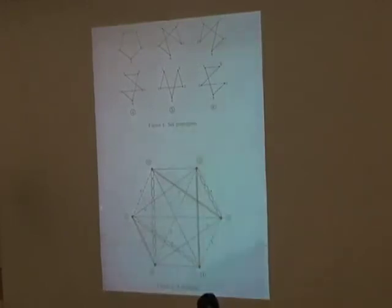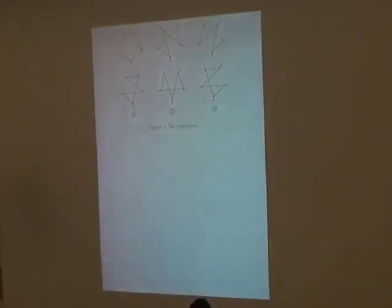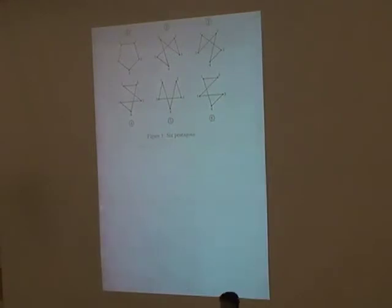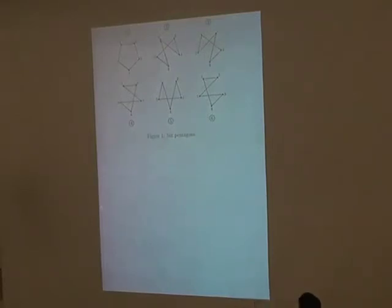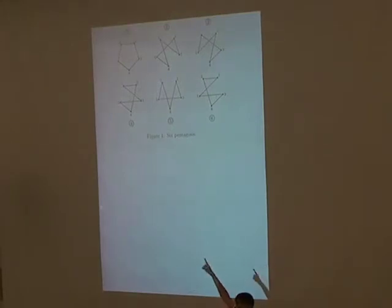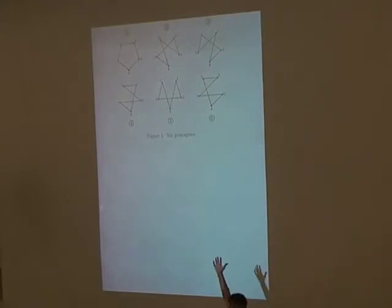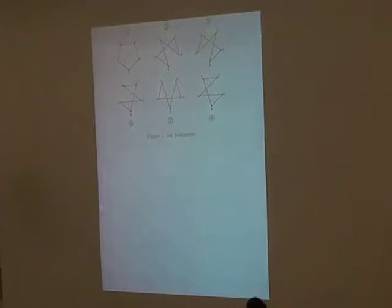The first five-cycle is just 1, 2, 3, 4, 5. Applying the elements of A5 on that five-cycle, you find you get six five-cycles. The other A5 orbit of five-cycles is obtained by taking the graph complements of these six five-cycles. So you can see a total of 12 five-cycles: these six, and then their graph complements. They're all possible five-cycles on five points, breaking up into two A5 orbits.